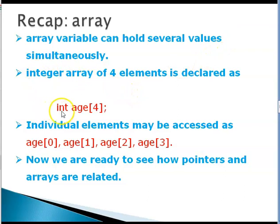For example, if you say int age[4], 4 is the capacity and int is the type. So, this age is an array variable that can hold four values age[0], age[1], age[2] and age[3] that are held in square brackets.